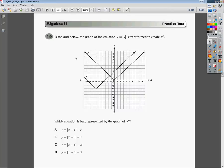In the grid below, the graph of the equation y equals the absolute value of x is transformed to create y prime. That's what that little thing means. It's not like it's a possessive y. Y needs its stuff. No, it means that it's just called y prime.